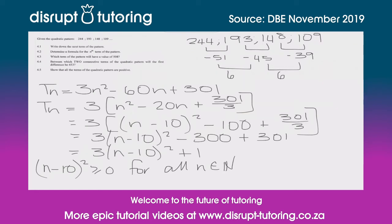Now let's multiply by 3. So 3(n − 10)² — because we're multiplying by a positive number, we know that this will also always be greater than or equal to 0.